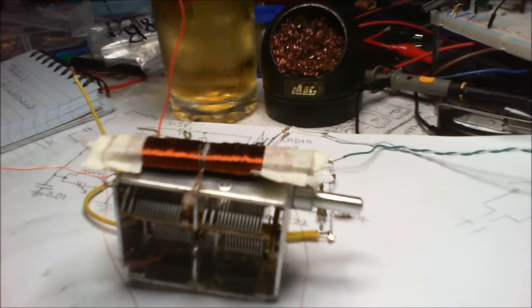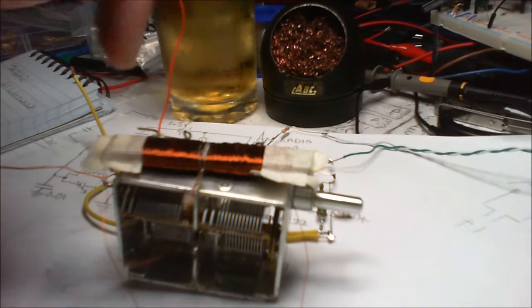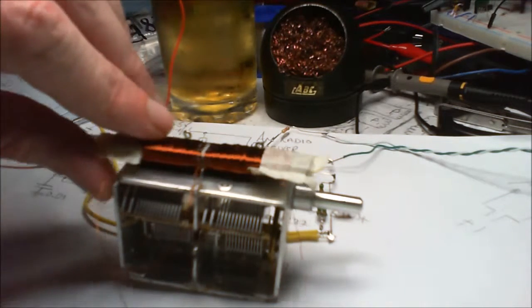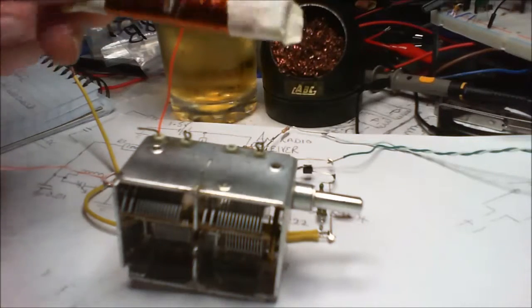Just a ferrite core. And here's some 30 gauge magnet wire. There's probably about 20 meters on there. It's probably too much, I don't know.